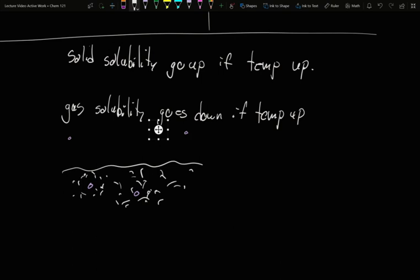The colder you are, the slower you're bouncing around. What little attractive forces there is to the water can hold on a little bit better. The hotter you are, the faster you're bouncing, the easier it is to escape. So gas solubility goes down as temperature goes up because it already wants to be out of solution. But solid solubility goes up with temperature increase because it means there's more energy to break the solid apart and spread it out into the water.